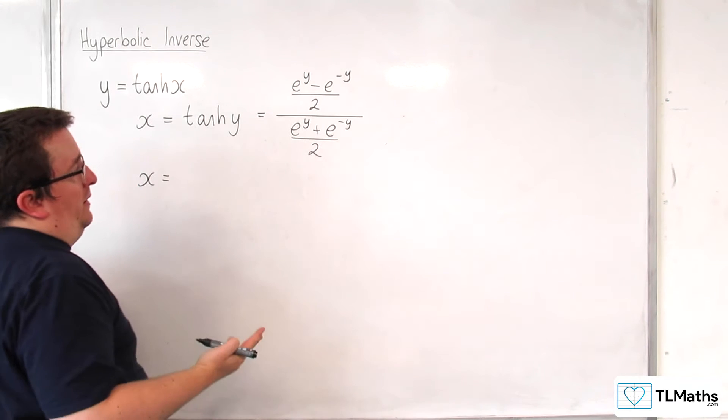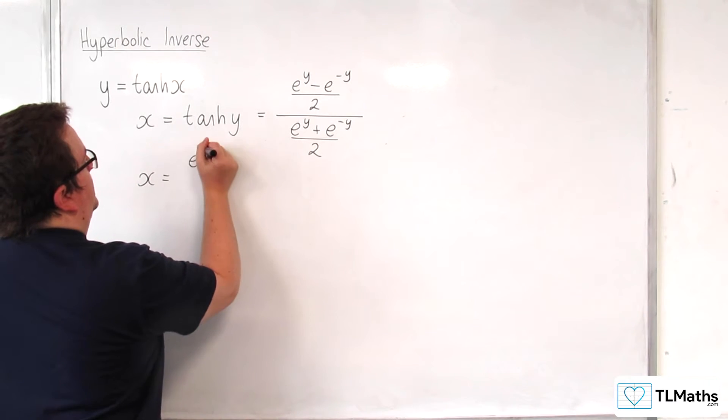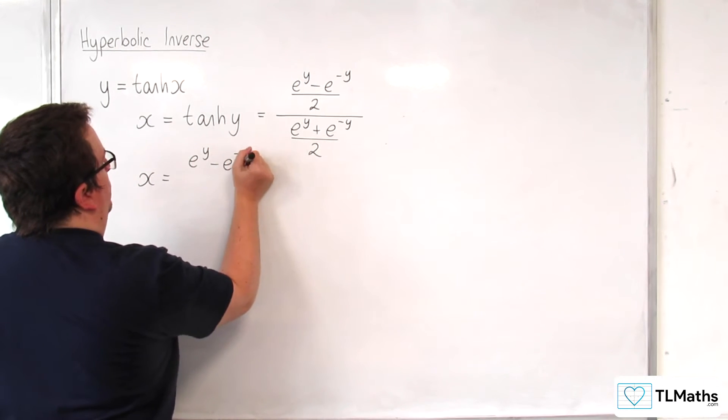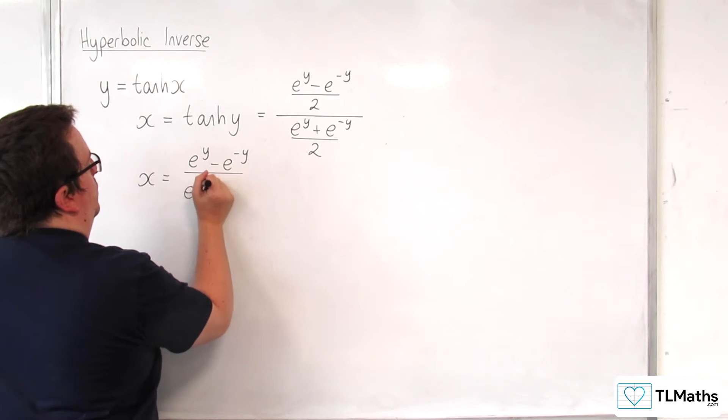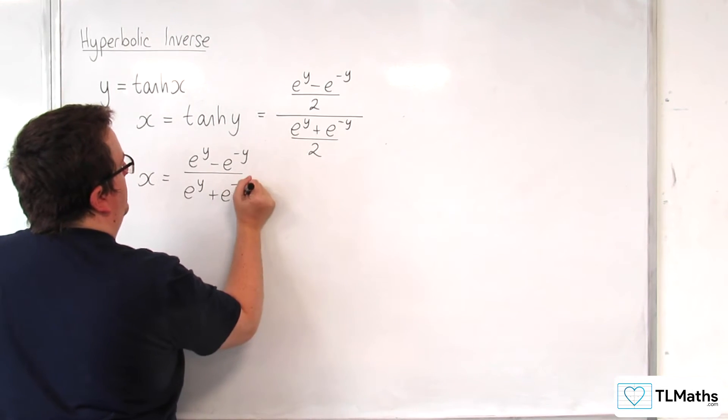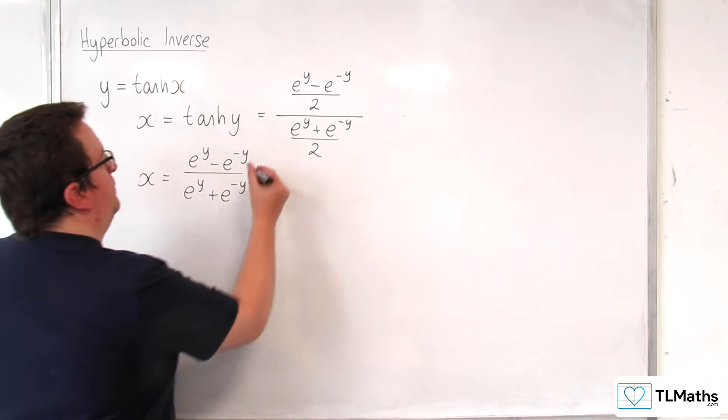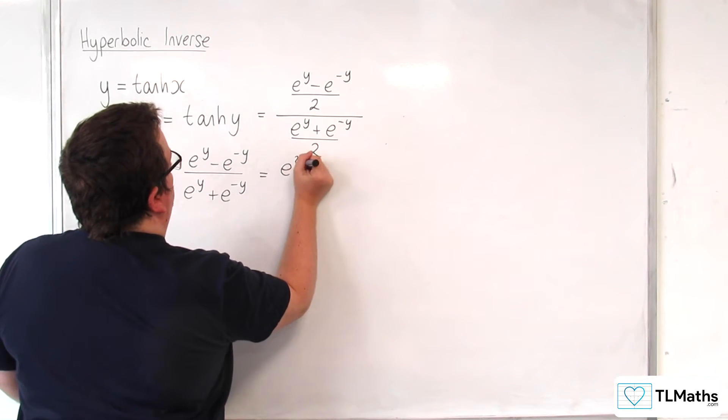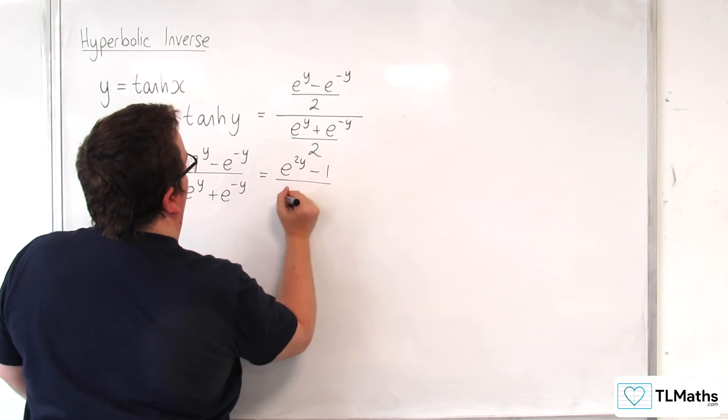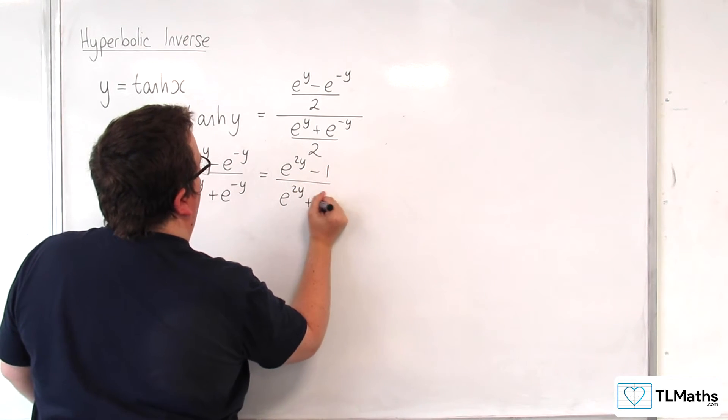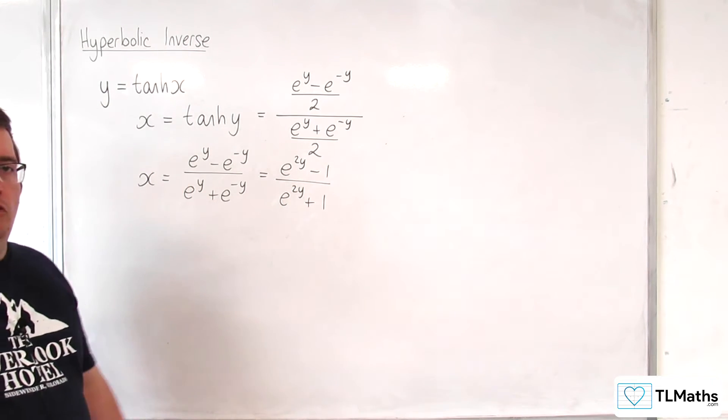So we can multiply top and bottom by 2. We get e to the y take away e to the minus y over e to the y plus e to the minus y. Now if you multiply top and bottom by e to the y, we're going to get e to the 2y take away 1 over e to the 2y plus 1, which is an easier format to work with.